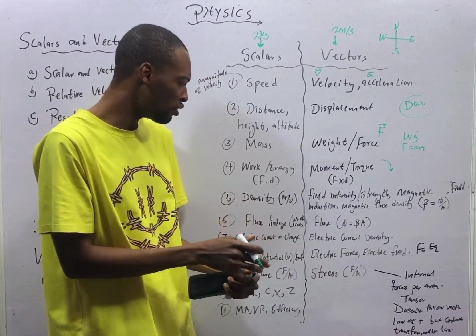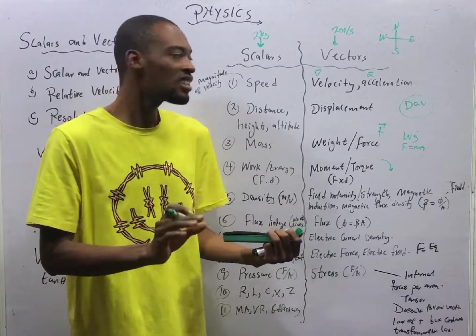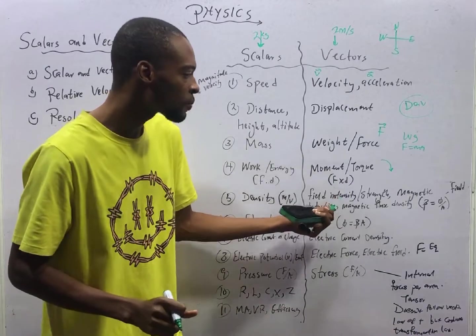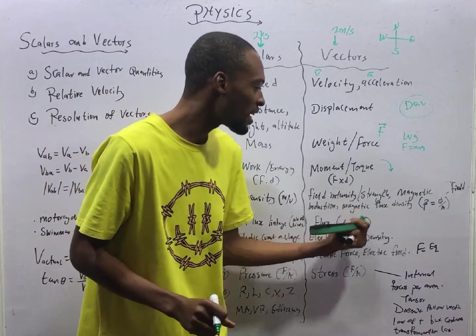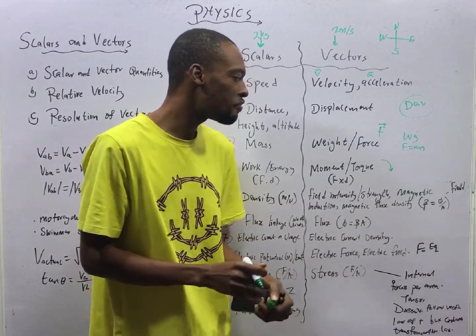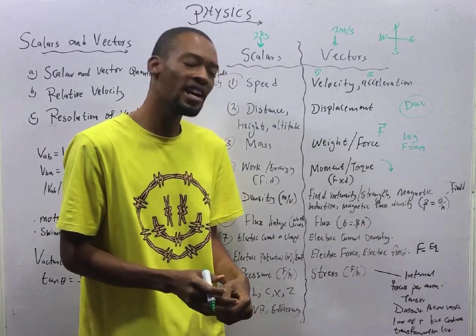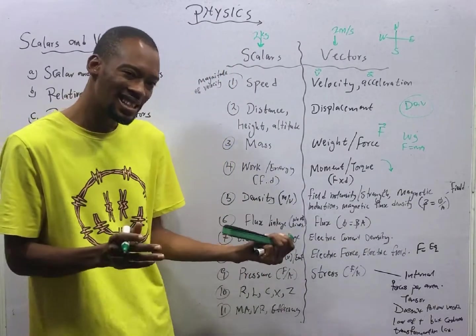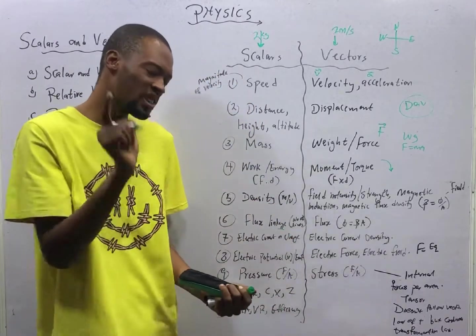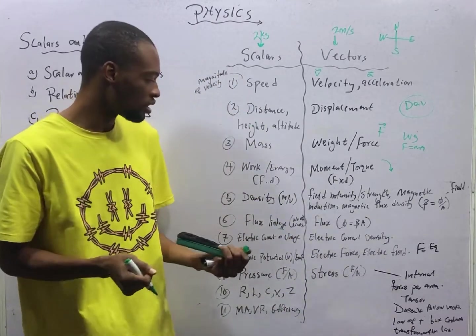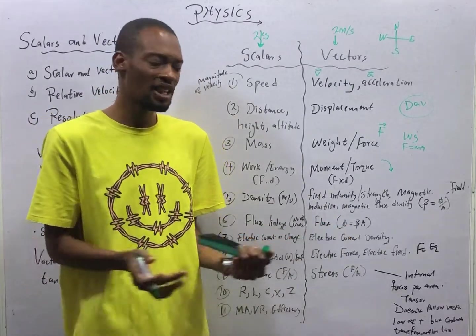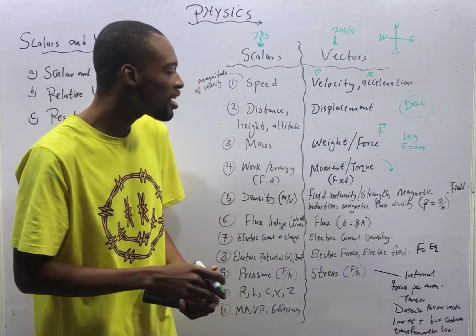Density is mass over volume. So ordinary density is a scalar quantity. While field density or strength, magnetic induction, magnetic flux density, they are field, which is force over area. They are vectors. Flux linkage, flux, just linkage of flux. Flux linkage is a scalar quantity. Because it tells us number of lines. That's what it indicates.